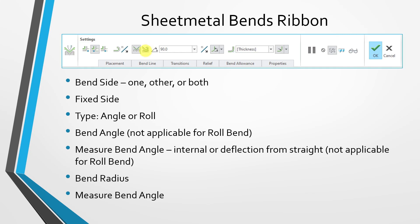When you choose a roll bend, you'll notice that the bend angle control and how you're measuring the bend angle are both grayed out. For an angle bend, this is the bend angle you would specify, and this drop-down list allows you to choose how you're going to measure the bend angle — whether you're measuring the internal angle or the deflection from straight, which are complementary angles to one another.